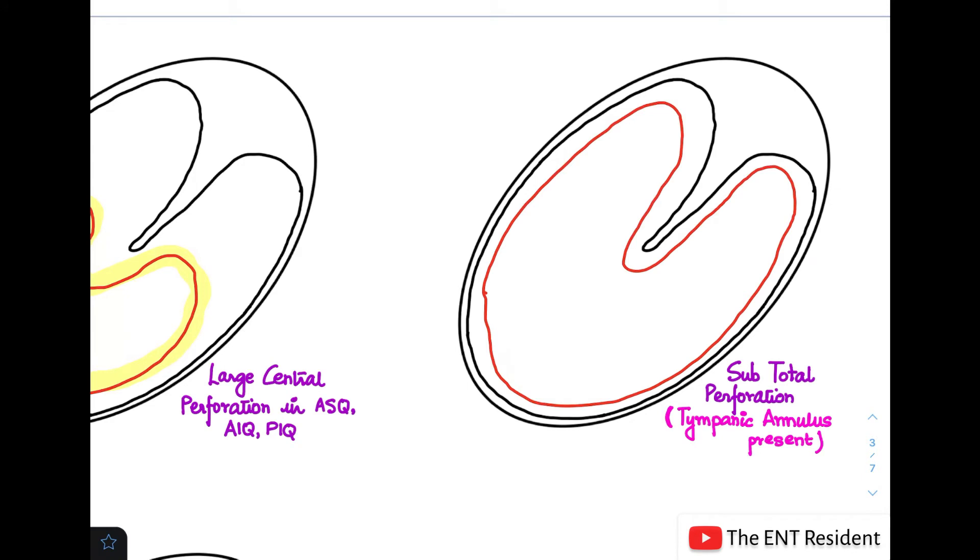This here is a subtotal perforation. Now, what is a subtotal perforation and how do you differentiate it from a total perforation? In a subtotal perforation, you'll see that the tympanic annulus is always present. It is mostly almost involving the whole of the pars tensa, as you can see, but the tympanic annulus is present over here and it is not involved.